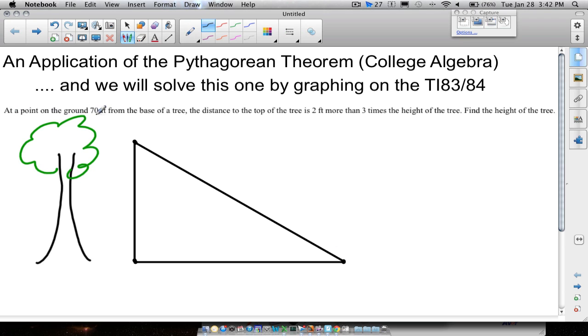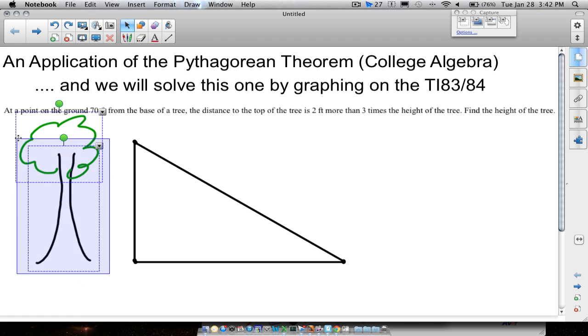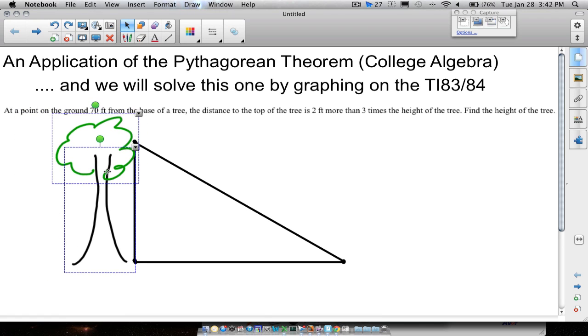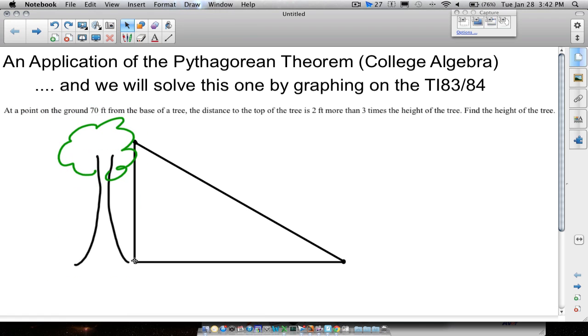And then we have a point on the ground and that's where this sentence starts off. At a point on the ground 70 feet from the base of a tree. So the base of our tree is right there exactly right here and here's our point. This point right here in blue is 70 feet from the base of the tree.